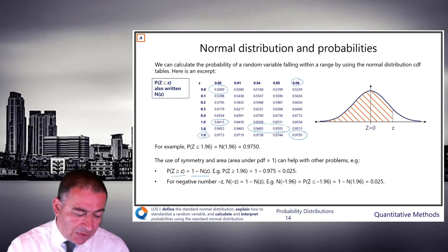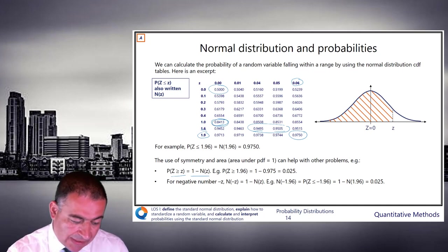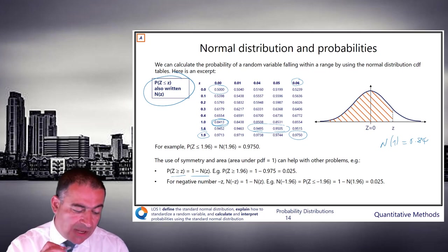So let's just do as an example 1. So 0.8413. So what we're saying here is n of 1 equals 0.84. That's what this means. So you can see the notation in this box. n of z is the cumulative distribution function at that point.